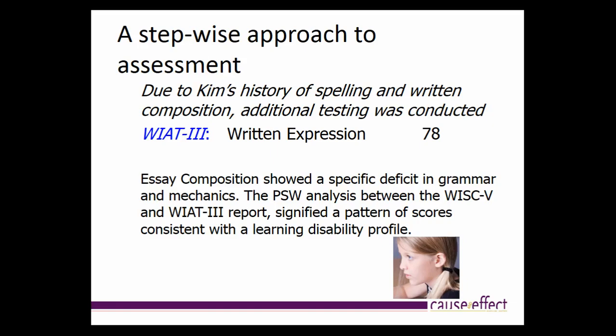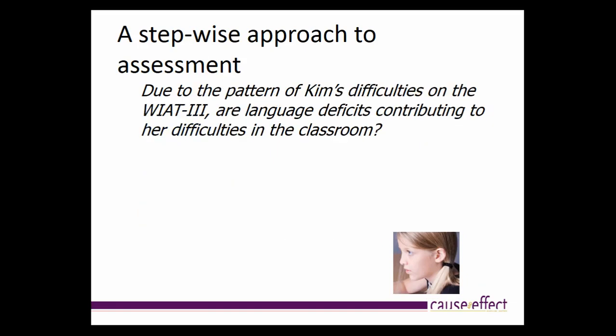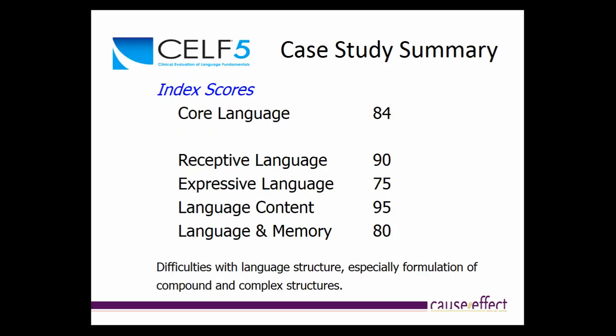Looking at retrieval skills contributing to Kim's difficulties: on the WISC-V, naming speed scored 84; rapid automated naming on KTEA-3 scored 81. There's a problem there tied to attention, working memory, and set shifting. For writing, KTEA-3 written expression scored 78 — a problem area. Essay composition shows deficits in grammar and mechanics. There is a pattern of scores consistent with a learning disability profile. Because of these patterns, Kim was referred for SELF-5 language evaluation. Her core language score was 84.